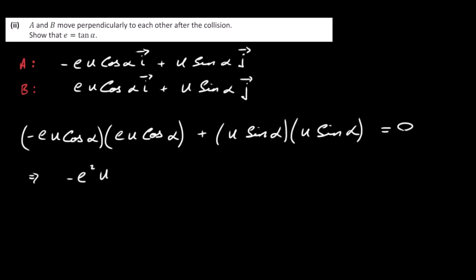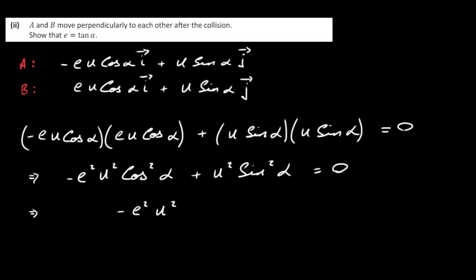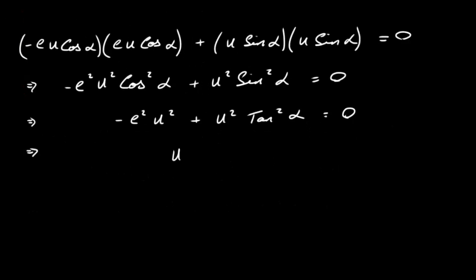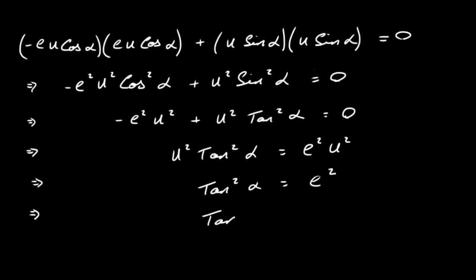Expanding: -E²U² cos²(α) + U² sin²(α) = 0. Dividing through by U² cos²(α): -E² + tan²(α) = 0, so tan²(α) = E². Taking the square root of both sides gives tan(α) = E, which is what we needed to show.